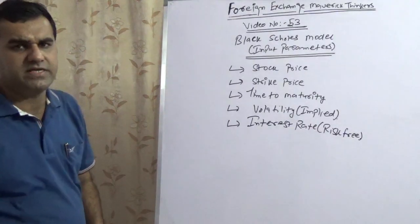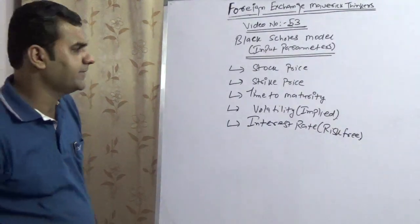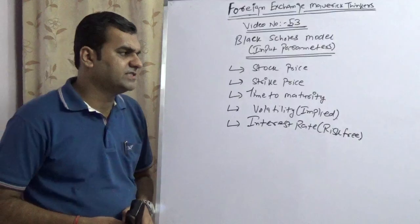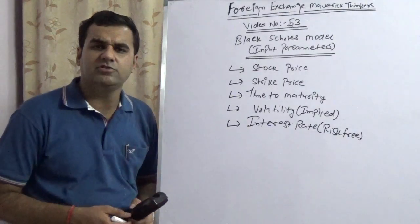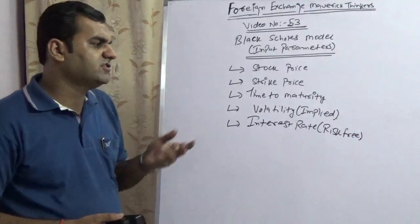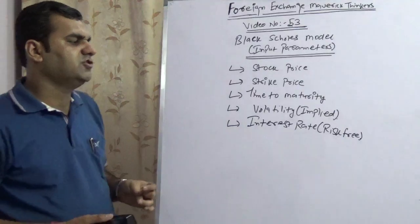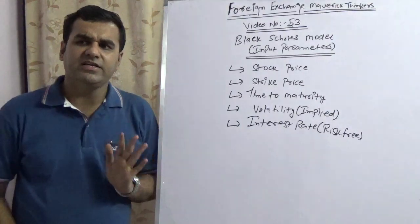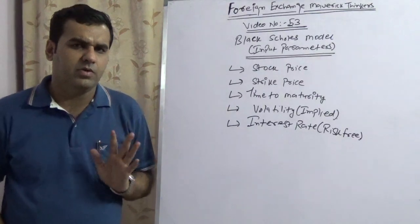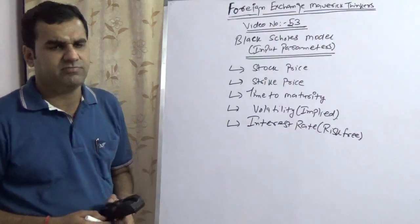One is stock price, which can also be referred to as spot price, the current price of a stock in the market. Second refers to strike price, the rate at which you hedge yourself. Third refers to time to maturity. Fourth refers to volatility, which refers to implied. Fifth refers to interest rate, which is known as risk-free rate.